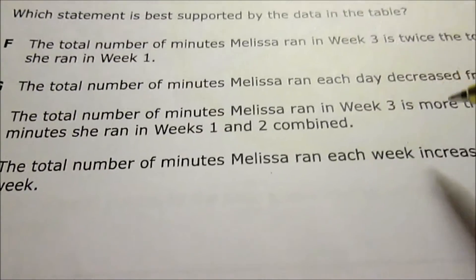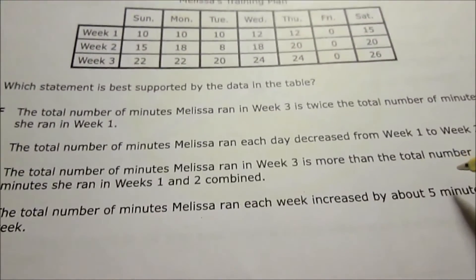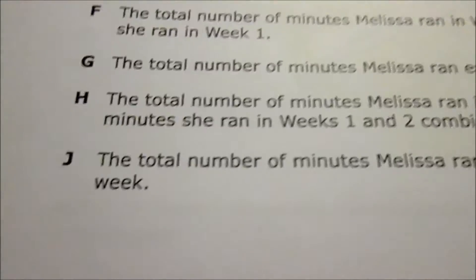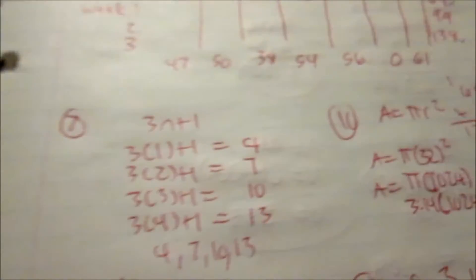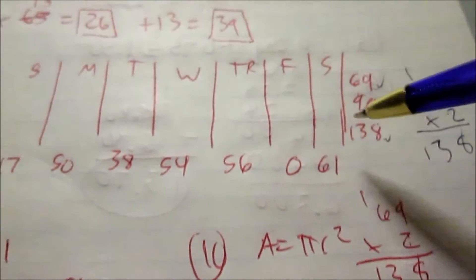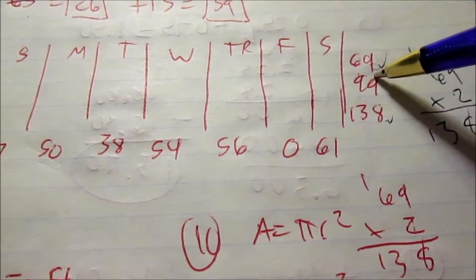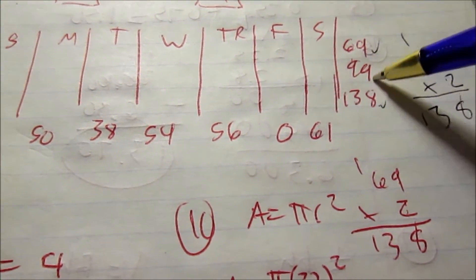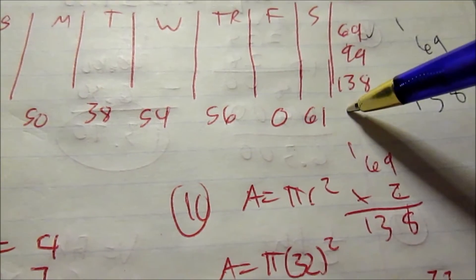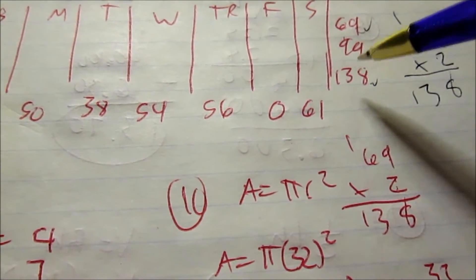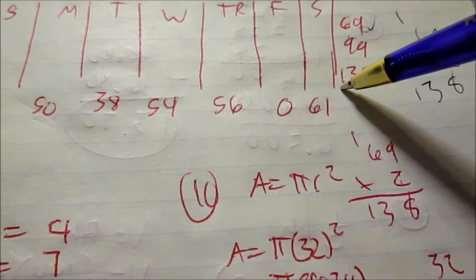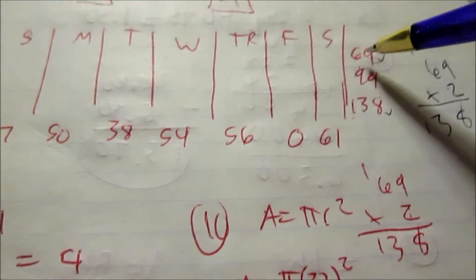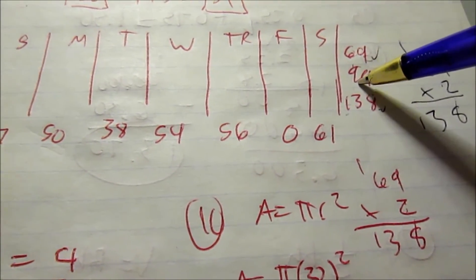H: Total number of minutes Melissa ran in week three is more than the total number of minutes she ran in weeks one and two combined. Let's see, week three is 138. If I added week one to two, 69 and 99, there's no way 138 is more than that. 69 is about 70, 99 is about 100, 100 plus 70 is 170. So answer H is not true.